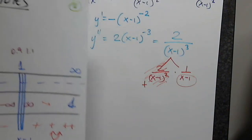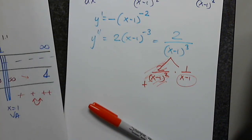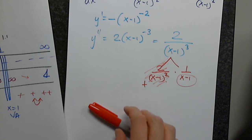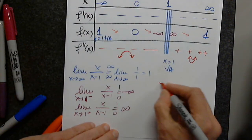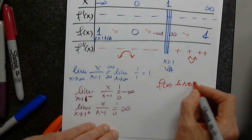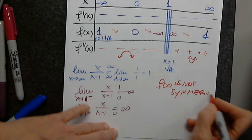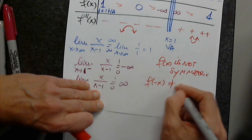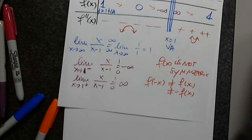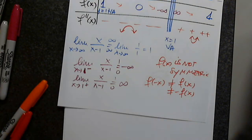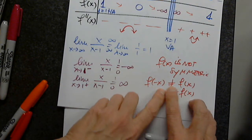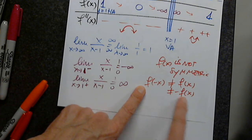This function is not symmetric. F of negative x does not equal f of x, and it does not equal negative f of x — it's not even and it's not odd. This means an even function is symmetric with respect to the y-axis: f of negative x equals f of x. An odd function — f of negative x equals negative f of x — is symmetric with respect to the origin. This is very important for Chapter 5 when we integrate even and odd functions.